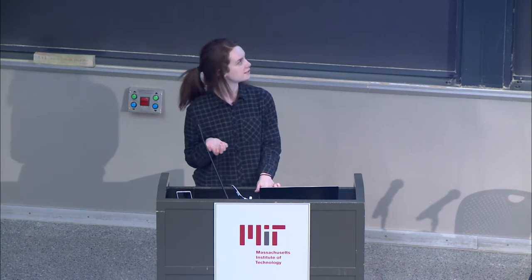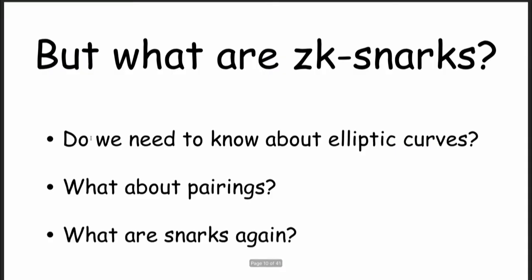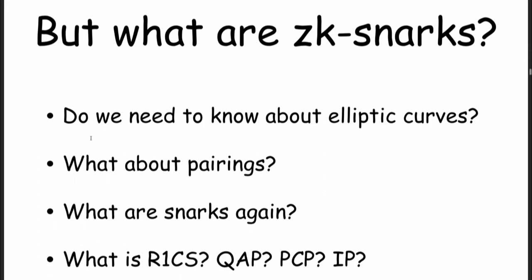Even Vitalik's posts have trigger warnings because SNARKs are complicated. The question is how do we understand ZK-SNARKs? Do we need to know about elliptic curves? Do we need to know about pairings? And then: what is R1CS? What is a QAP? What is PCP? What is an IP? There's a diagram that Vitalik uses and the Zcash people use, and it has all of these acronyms — seven stages — and if you don't know any one of the stages, looking at seven things you don't know is extremely intimidating.